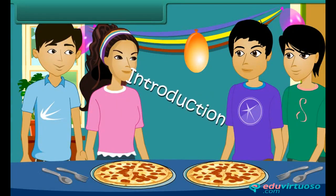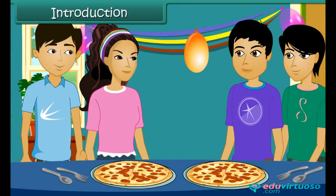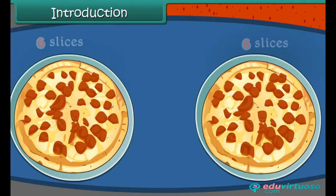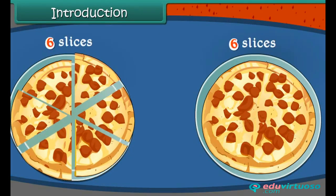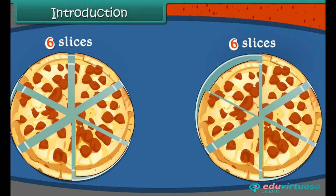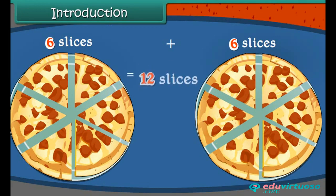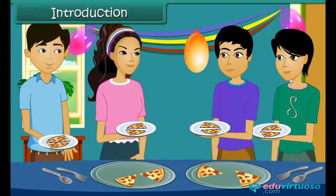Rashmi bought two pizzas at a restaurant. Each pizza is cut into six equal slices. Therefore, there are twelve slices. Rashmi has to divide these slices among her three friends and herself. That means there are four friends.